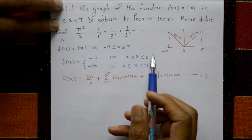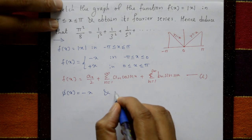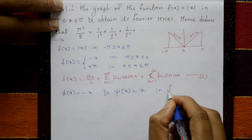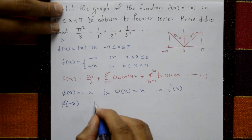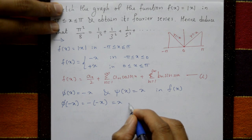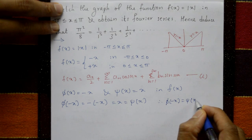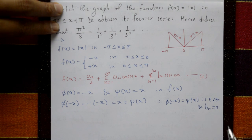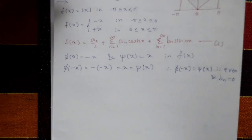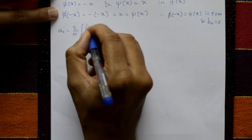Before starting, we check whether this function is even or odd. We have φ(x) = -x and ψ(x) = +x. Putting x = -x in φ(x): φ(-x) = -(-x) = x = ψ(x). Therefore φ(-x) = ψ(x), meaning this function is even. For an even function, bₙ = 0; only a₀ and aₙ are required.